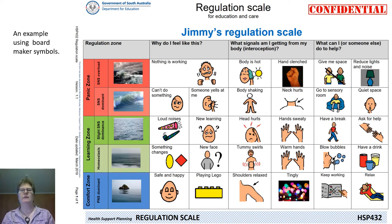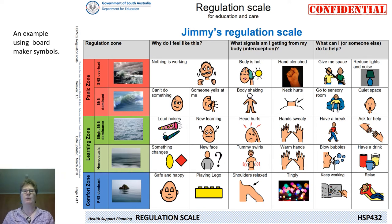Here's an example of a regulation scale using Boardmaker symbols. These regulation scales have five sections: the comfort zone (parasympathetic dominant), the learning zone split into two — where you're in homeostasis and where you're in slight SNS dominance — and the panic zone split into two zones. In the lower panic zone, you're sympathetic nervous system dominant but not overloaded, so you can still possibly self-regulate or be co-regulated. However, when you tip over into the top panic zone — SNS overload — that is your survival instinct mode, and you cannot be co-regulated or self-regulated.